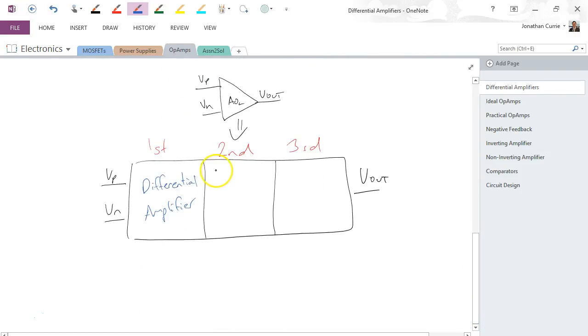In the second stage, we amplify the voltage difference. So this is a voltage amplifier. We have a large voltage gain, it could be 100,000 or something like that, but a very large gain here.